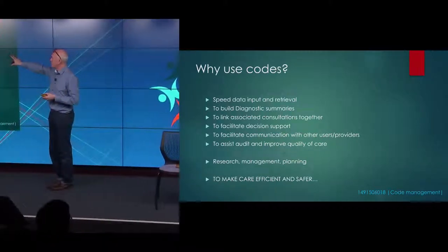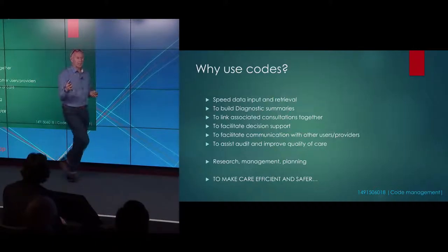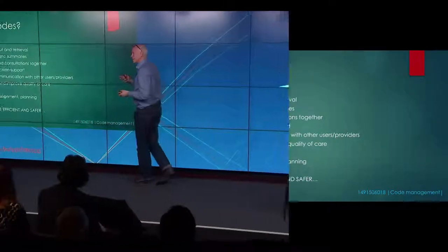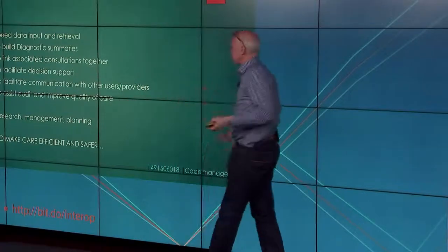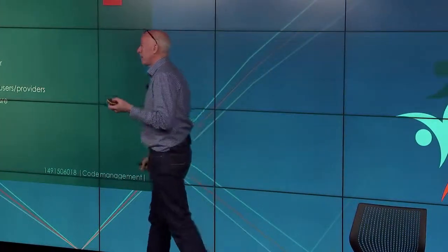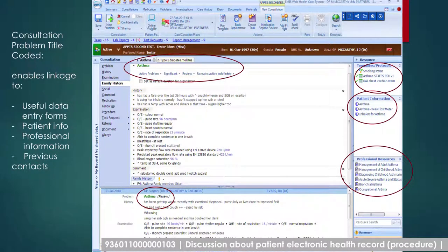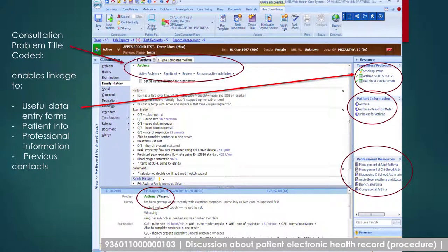Why do we use codes? We use codes to speed data input and retrieval — handling free text is much harder (natural language processing exists but is pretty difficult). We use codes to build diagnostic summaries, link consultations together, facilitate decision support, communication, research, management, and planning — but fundamentally to make care efficient and safer. For those still working on paper, in an EPR a problem title placed in a particular part of the structure enables linkages — instant access to patient information leaflets, professional resources, and previous consultations.